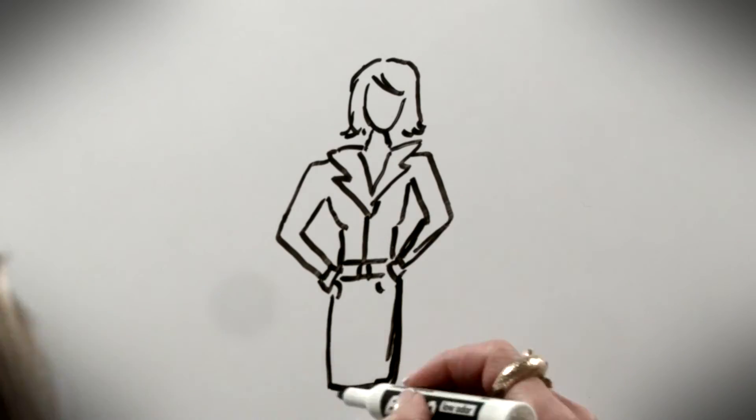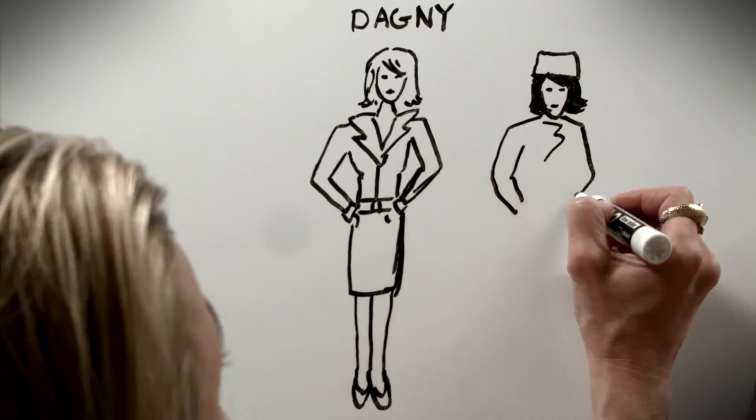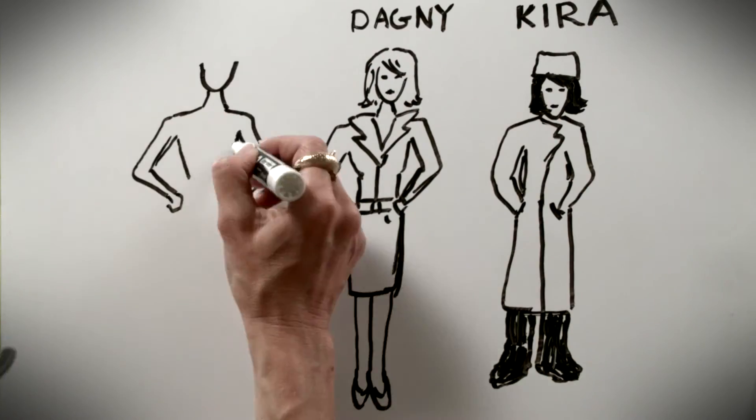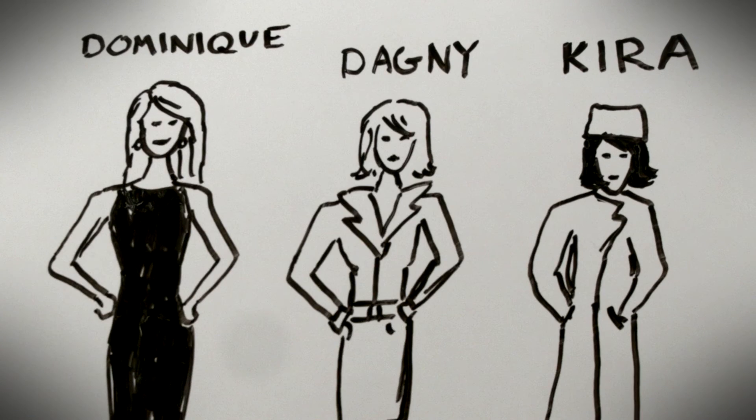She wrote about strong women like Dagny in Atlas Shrugged and Kira in We the Living, and Dominique in the Fountainhead.